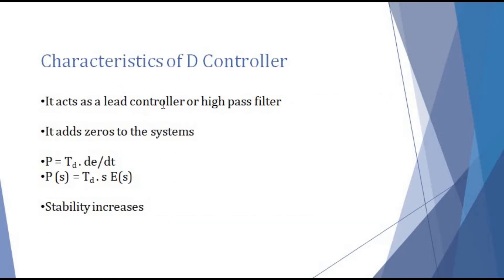The D-controller is also called a lead controller, whereas the I-controller was called a lag controller. The D-controller is a lead controller because the controller output leads the error generated — it provides controller output for future errors even before they occur. It is a high-pass filter as well, because using a D-controller, higher frequencies will be passed but lower frequencies will not be passed.